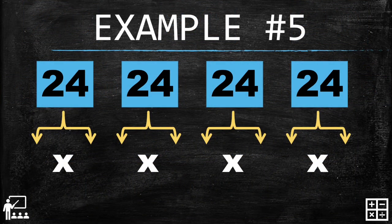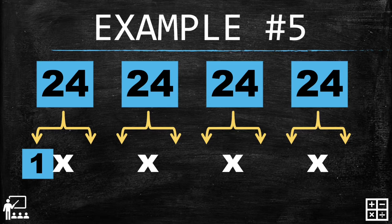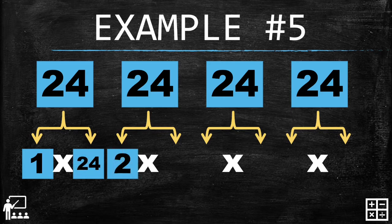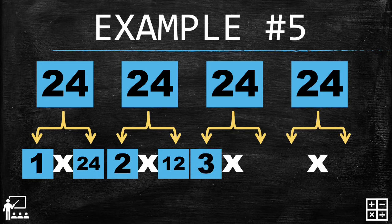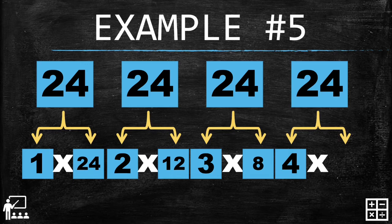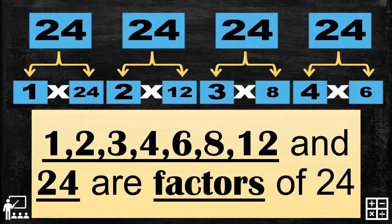Let's try more examples. Example number five — I'll give you the number twenty-four. Can you guess the pairs? Very good — twenty-four. One times twenty-four, two times twelve, three times eight, four times six. To summarize, one, two, three, four, six, eight, twelve, and twenty-four are factors of twenty-four.